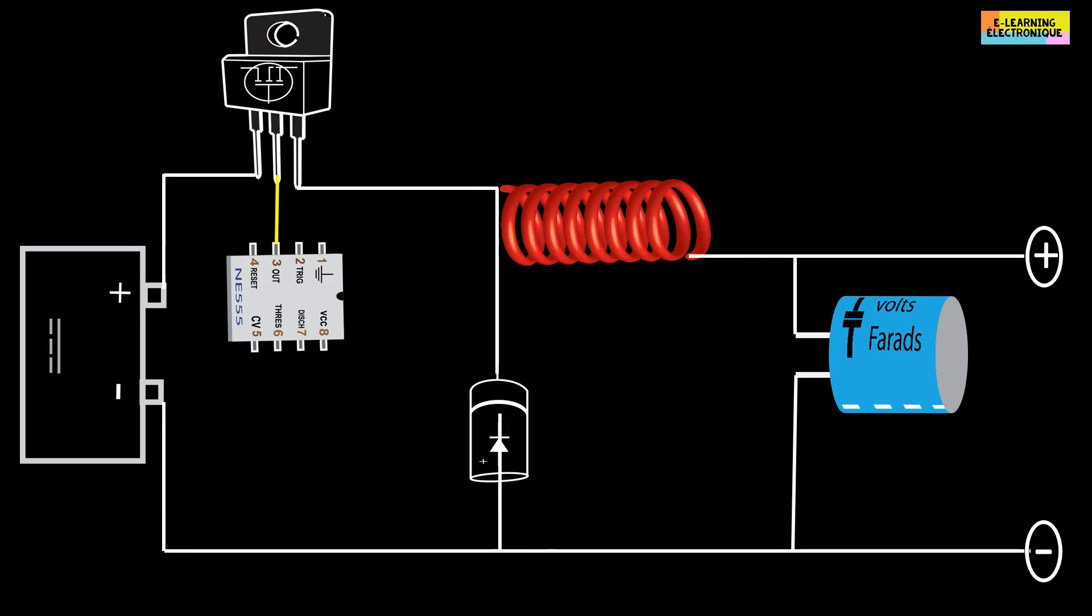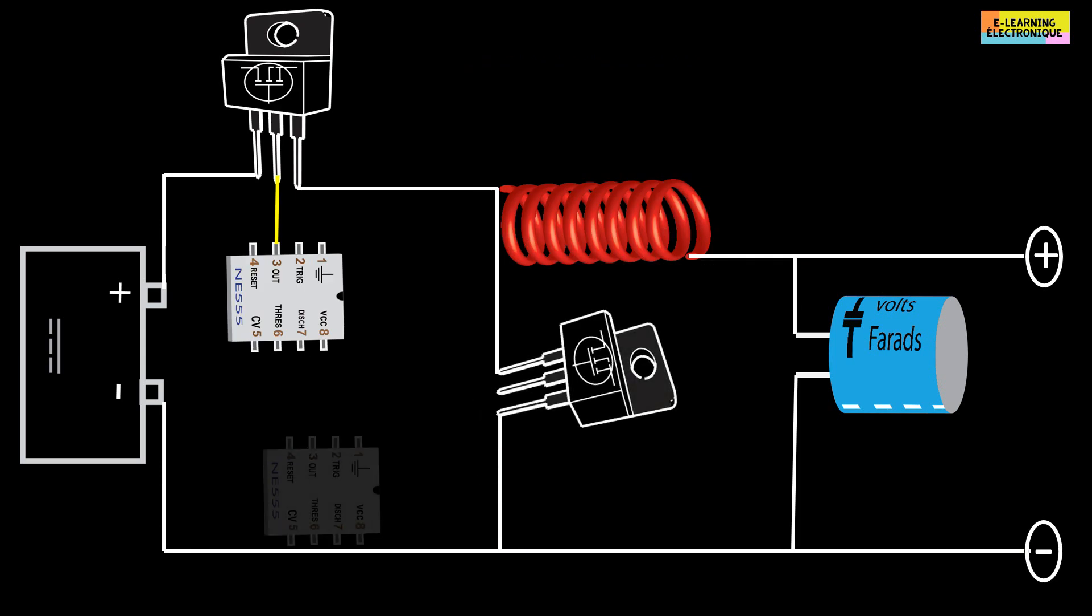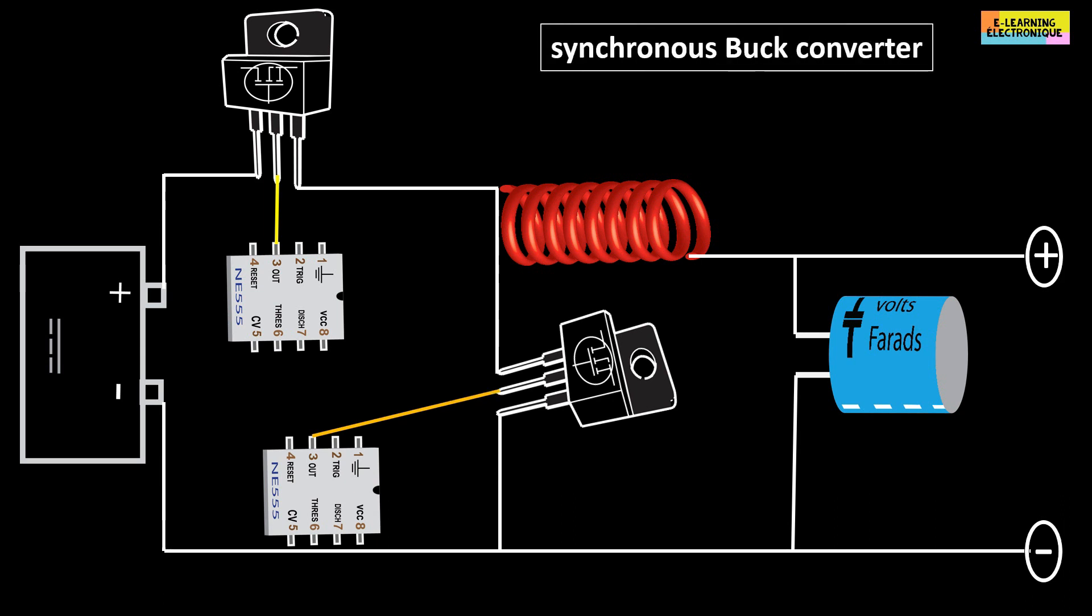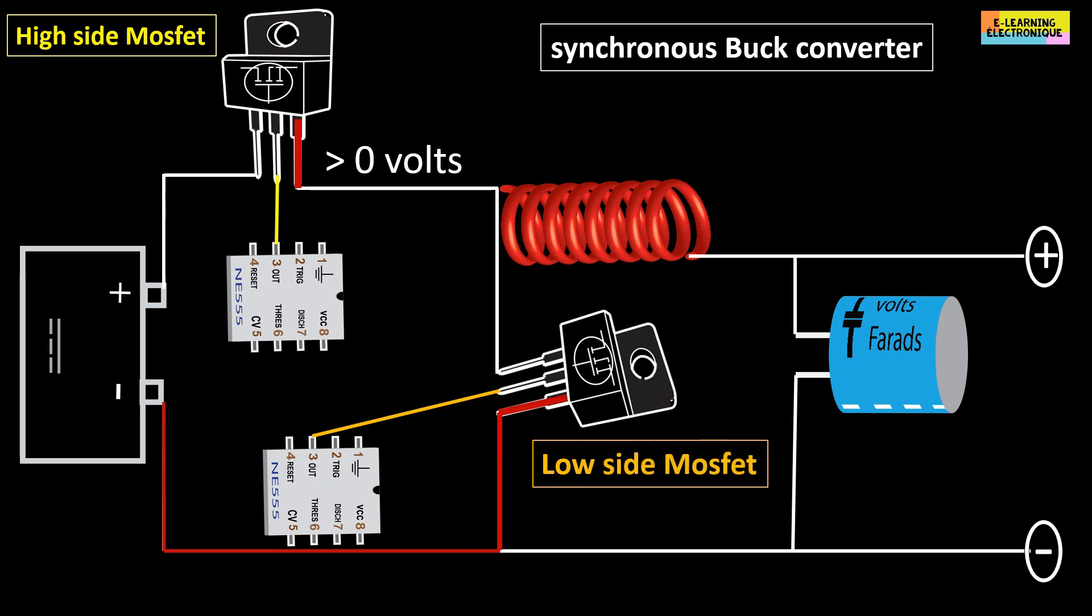There is a variant of the buck converter, where the diode is replaced by a second MOSFET. This circuit is called synchronous buck converter. The MOSFET whose source is not connected to the ground is called high-side MOSFET. The MOSFET whose source is connected to the ground, i.e. zero volt is called MOSFET in low side. The device that allows the control of the MOSFET is called driver.